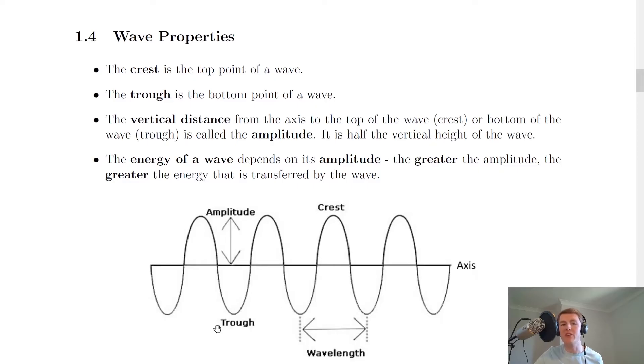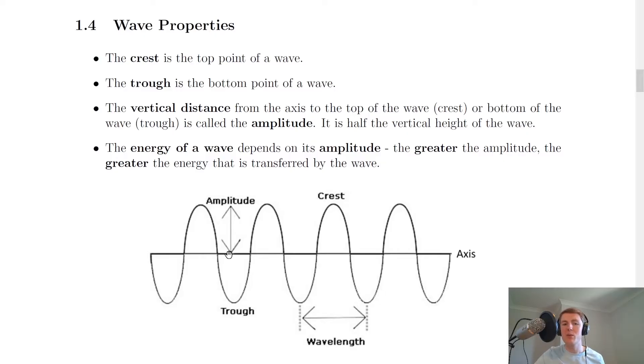Now the next thing to mention is called the amplitude of the wave. And you'll see in this picture we've got the amplitude labeled here. Now the amplitude is the vertical distance from the axis to the top of the wave or bottom of the wave. So that means the distance from the axis, the middle of the wave, to the top point of the wave, that is called your amplitude. We can also say though that the amplitude is from the trough to the axis or the axis to the trough. So it's either from the middle to the bottom or the middle to the top of the wave. Don't make the mistake of thinking that the amplitude is the full vertical height of the wave, because it's not. It's just half the vertical height.